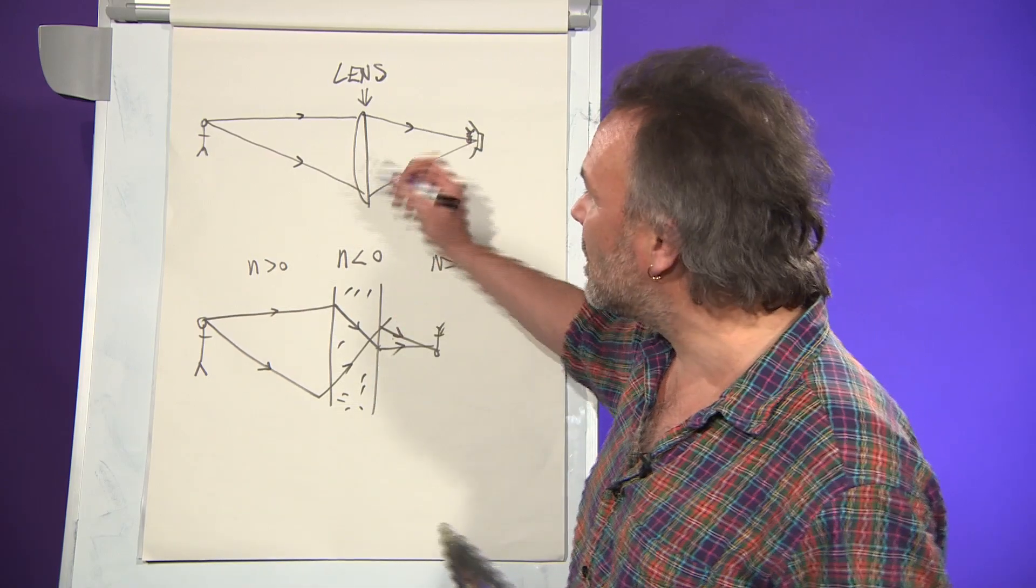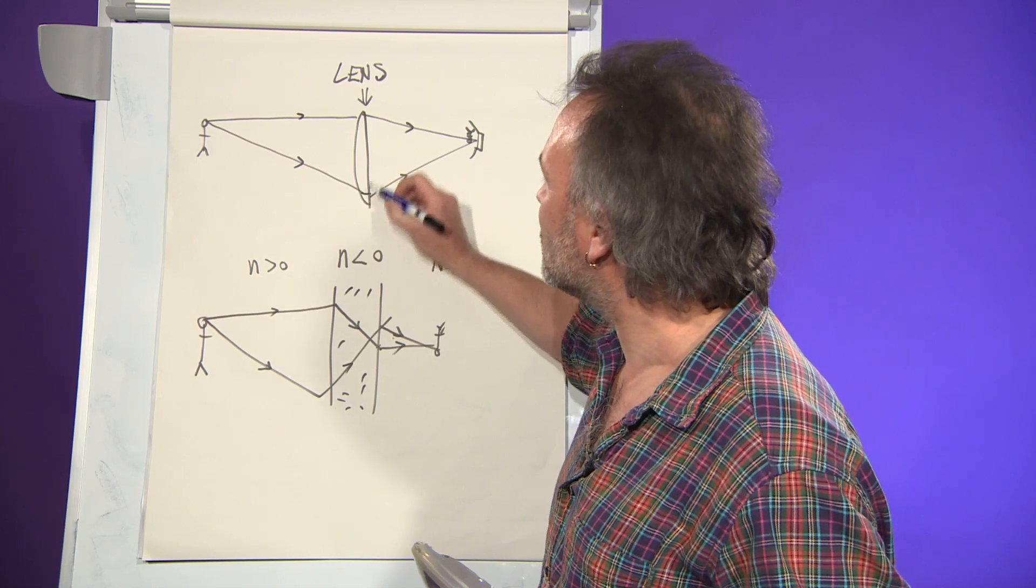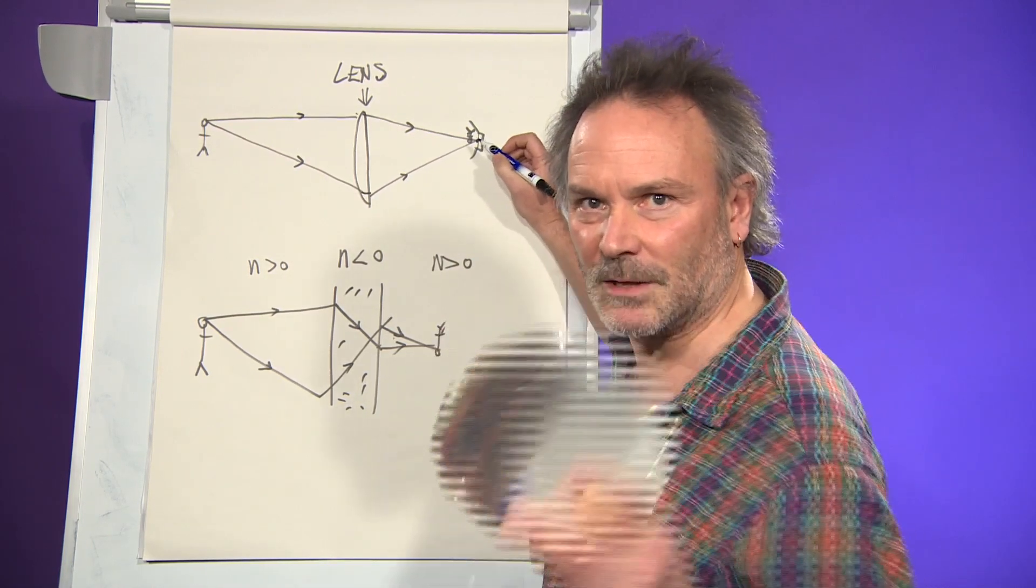If you have one in your camera and you take a picture of someone, the light from that person comes along in straight lines. When it gets to the lens, it gets bent and focused to an image in the sensor in the camera.